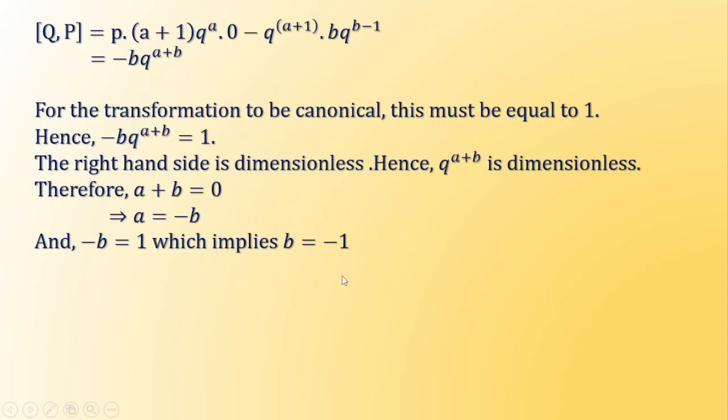which implies b = -1. So from these two equations, we can say that a = -(-b) = -(-1) = +1.